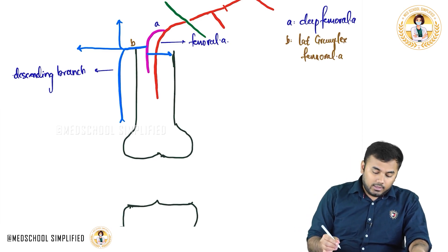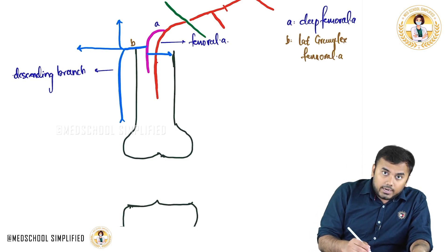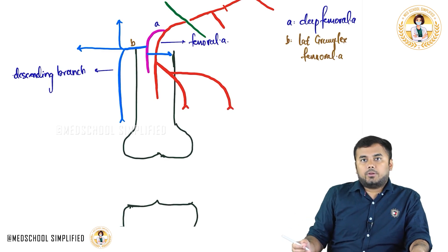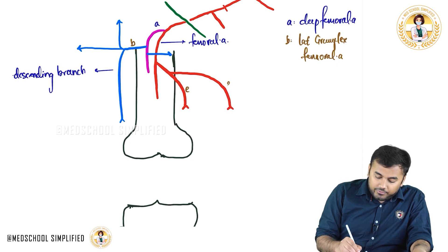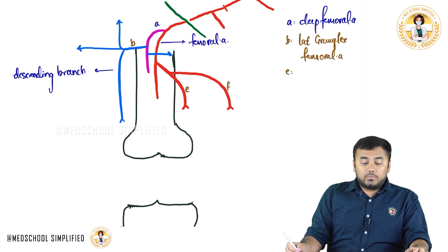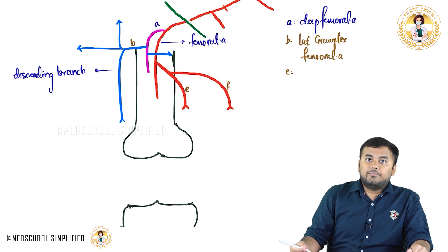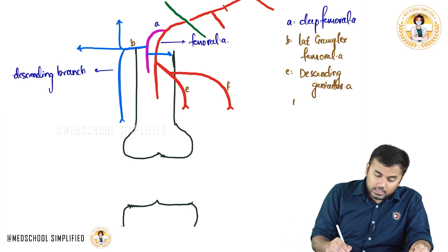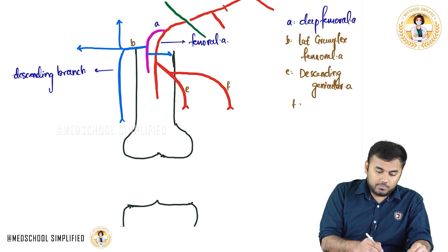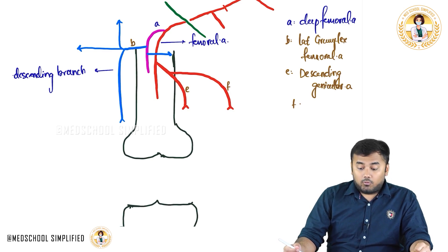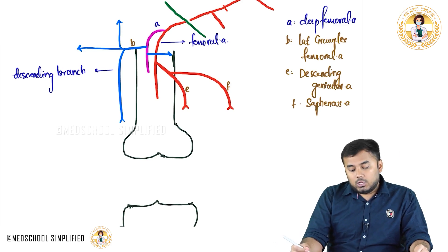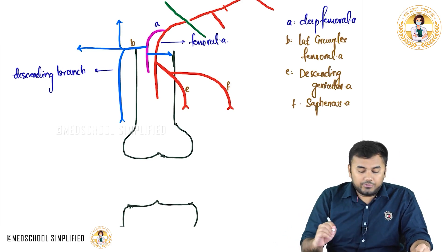Next, from the femoral artery itself, you have two branches — E and F. E stands for the descending genicular artery, and F stands for the saphenous artery. So the saphenous artery and descending genicular artery are branches of the femoral artery.